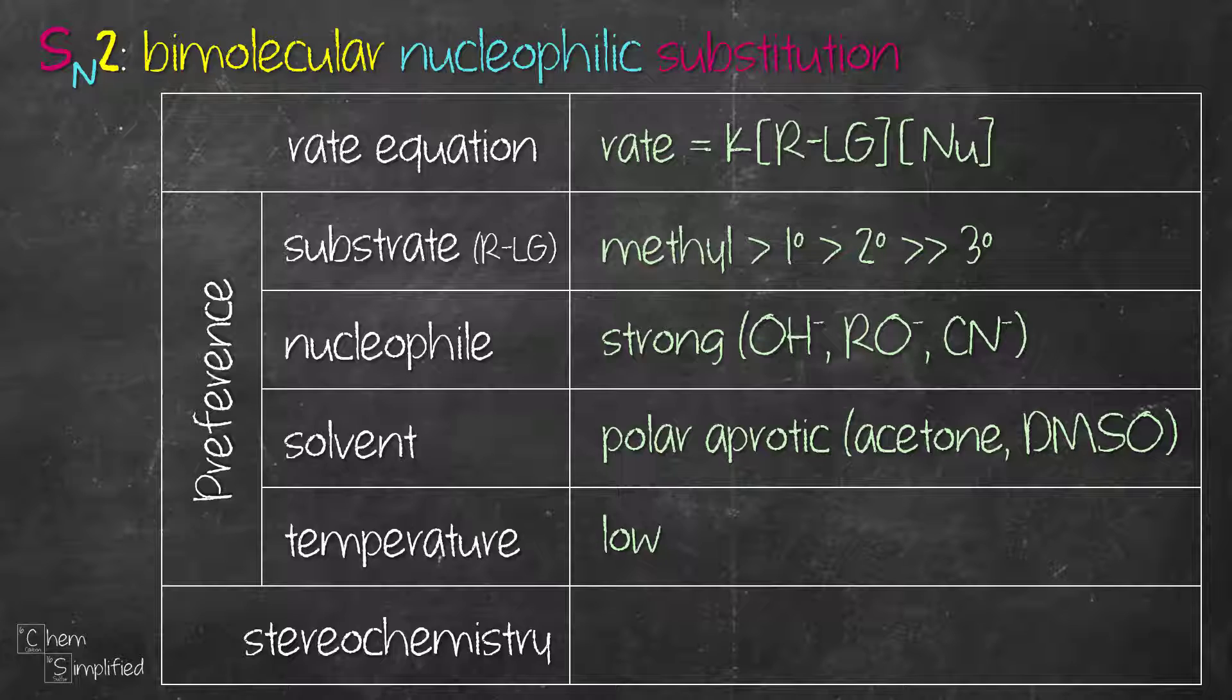And for the stereochemistry of SN2, we know that it happens through a backside attack. If the carbon connected to the leaving group is chiral, then the SN2 reaction is going to give us an inversion of the stereochemistry. We're going to look at the mechanism to explain this inversion.